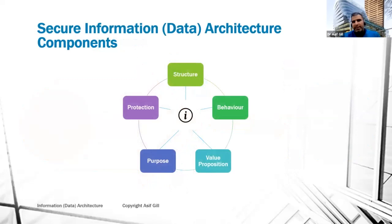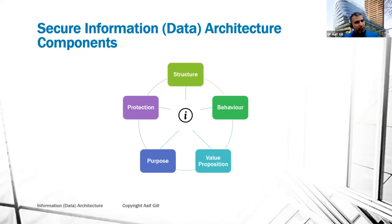What is in the architecture itself? I call it the secure information data architecture component. Information security is sometimes considered separate from information architecture, which is okay, but both disciplines need to work together — they need to be integrated. Security and protection need to be part of the design of the architecture, embedded in all the layers. At a very high level, there are five components when dealing with secure information or data architecture.